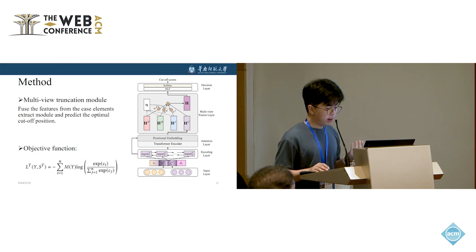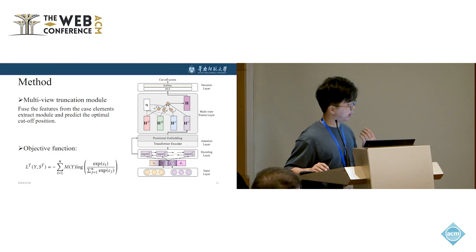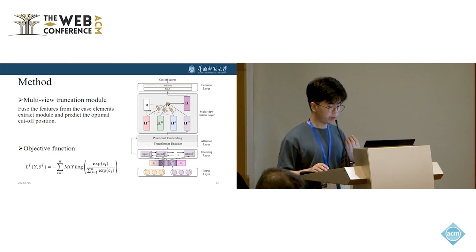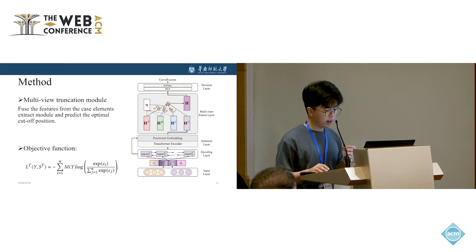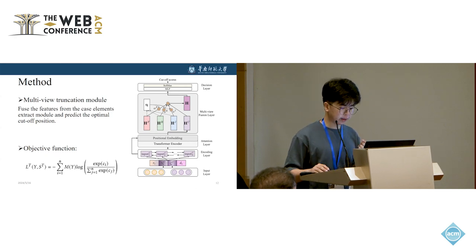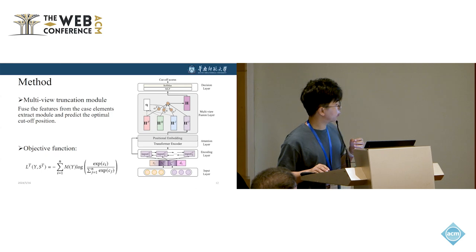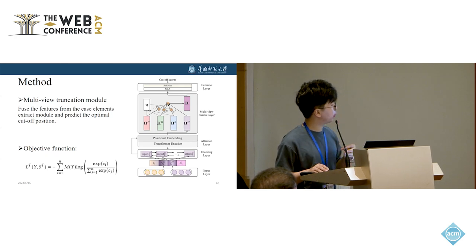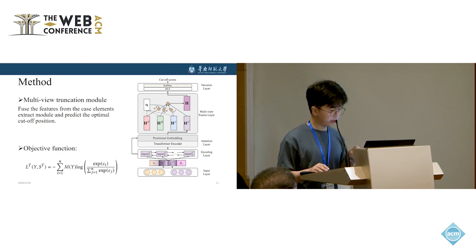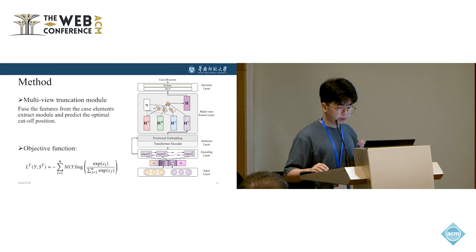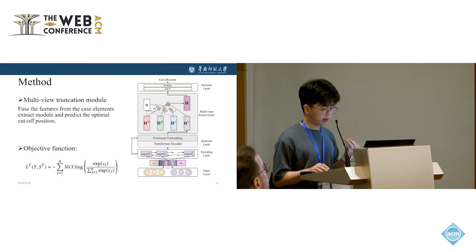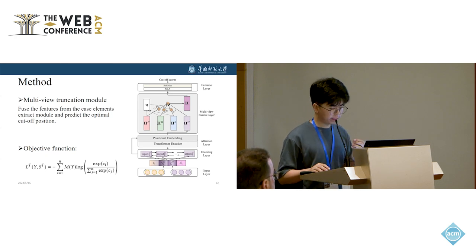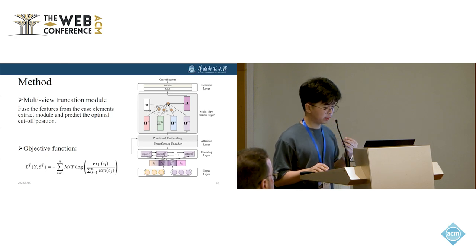MileCut uses this multi-view truncation model to identify and incorporate the most informative view into the truncation decision-making. There are five layers in this model: input layer, encoding layer, attention layer, multi-view fusion layer, and finally the decision layer. The input includes ranking scores, document statistics, and document level representation. Similar to the case extraction network, the encoding layer and the attention layer use the BiLSTM and transformer encoder to learn the document level feature.